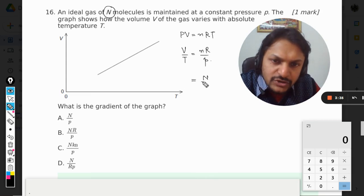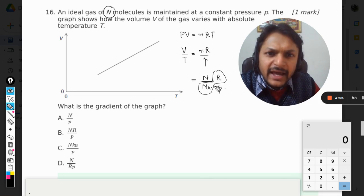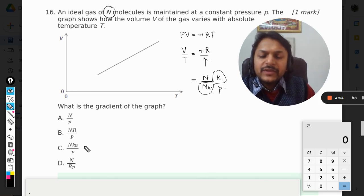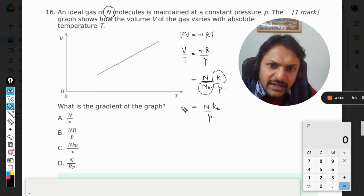Number of moles is number of molecules divided by Avogadro's number, multiplied by R divided by P. What is R divided by NA? This becomes the Boltzmann constant. So it will be N times kb divided by P. This is V by T, which will be known as the gradient of the graph.